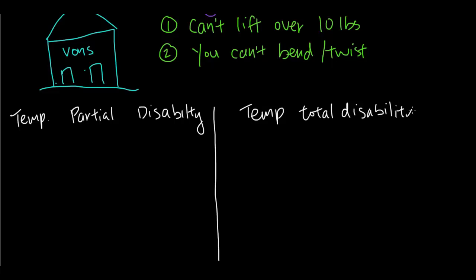The difference between the two is: if you are temporarily partially disabled, you're still working, but you are working fewer hours than you used to, or you're making less money than you used to because of your injury. Temporary total disability is when you're completely off of work.